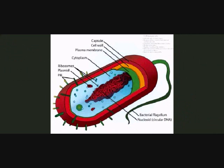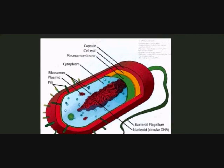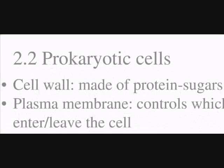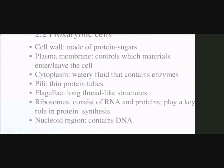This is a picture of a prokaryotic cell, which is what we're going to talk about next. Prokaryotic cells have several parts to them. First of all, they have a cell wall, which is made of protein sugars. And a plasma membrane, which controls which materials enter or leave the cell. A cytoplasm, which is watery fluid that contains enzymes.